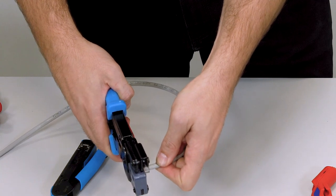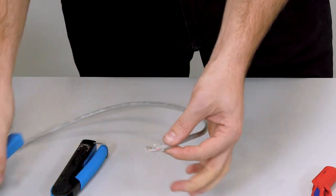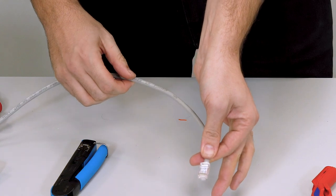When I'm happy, keep the cable compressed in, squeeze down, and that should be an RJ45 all made off.